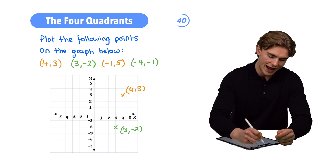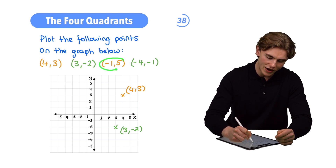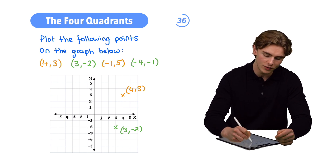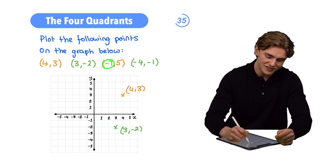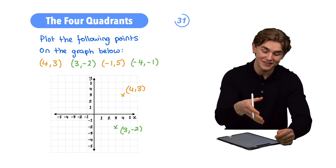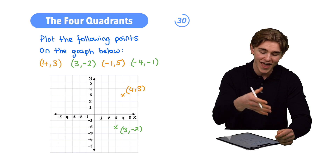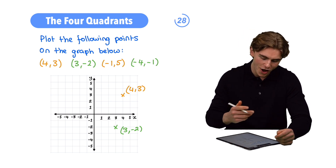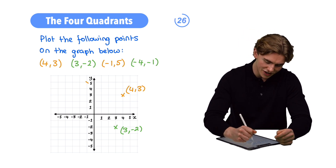Next up, we're going to have the point (-1, 5). Where is it going to go? This time we have a negative value of x and a positive value of y, so we go in the negative x direction and the positive y direction — over to the point (-1, 5), which is up here.